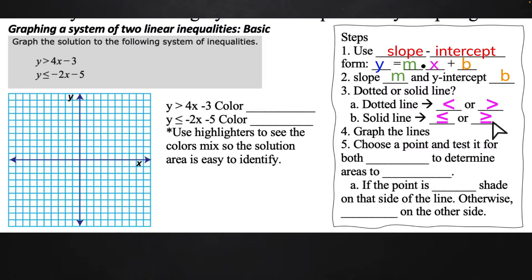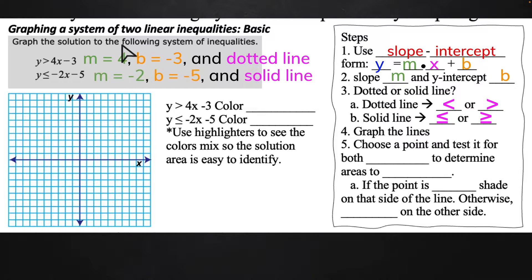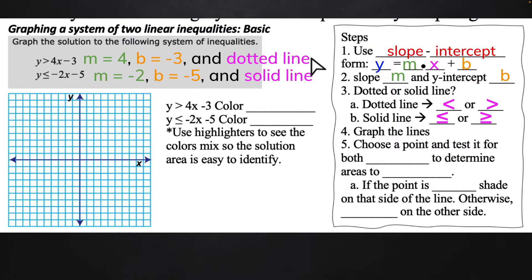We're going to graph our lines. So M is equal to 4 — our slope on this first one is 4 and our Y-intercept is equal to negative 3. Using slope-intercept form, I was very quickly able to grab those. I also note that it's a dotted line because it's just greater than. The second one: slope is negative 2, Y-intercept is negative 5, and it's a solid line because it's less than or equal to.